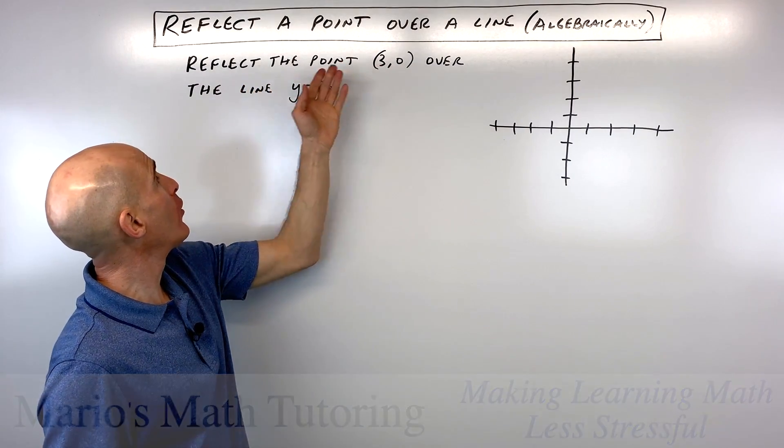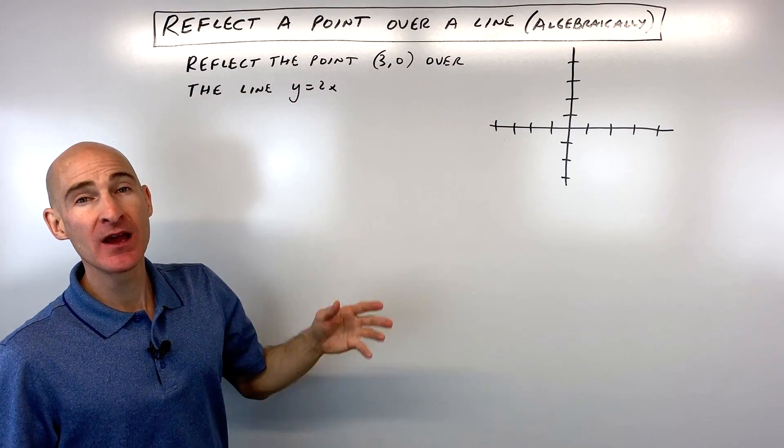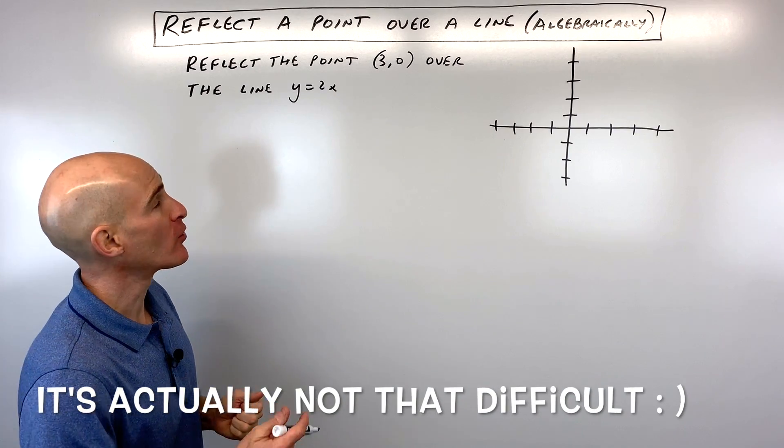Reflect the point 3 comma 0 over the line y equals 2x. There's a lot of steps involved, but I'm going to show you how to work with this.